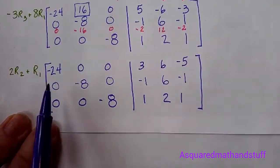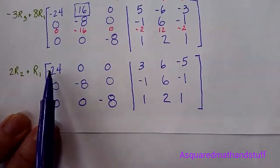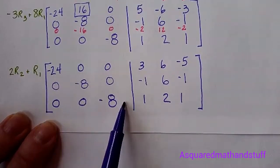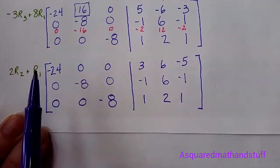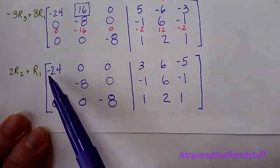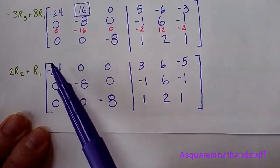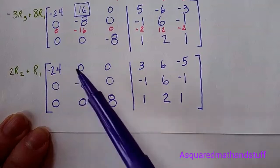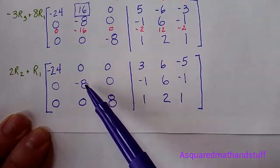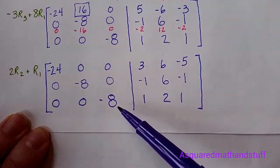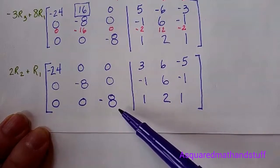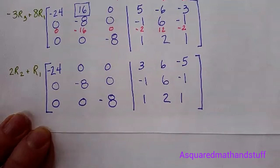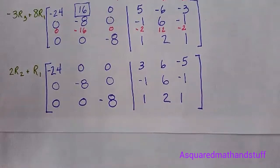All we're left with now is this diagonal, and we need to get our main diagonal to be all positive 1s. So let's take negative 1 over 24 and multiply it by row 1, negative 1 over 8 and multiply it by row 2, and finally negative 1 over 8 and multiply it by row 3. And then we will have our final inverse matrix.